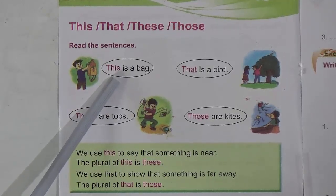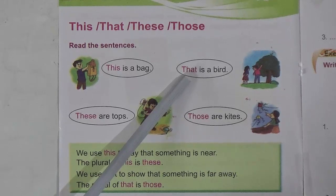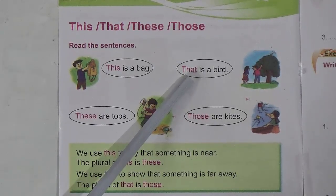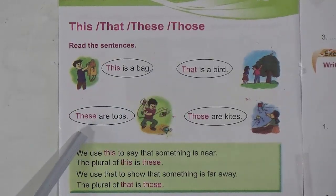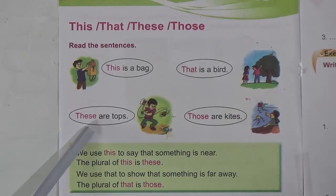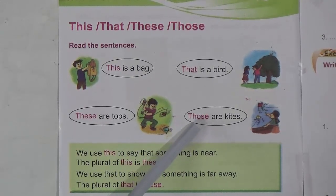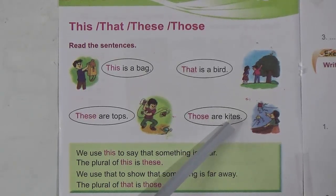We use 'that' to indicate someone or something which is far away from us. And we use 'these' to indicate something plural — people, animals, or birds which are near us. And we use 'those' for plural objects which are far away from us. Now we will do the exercise.